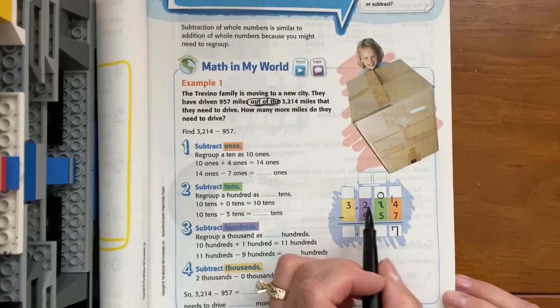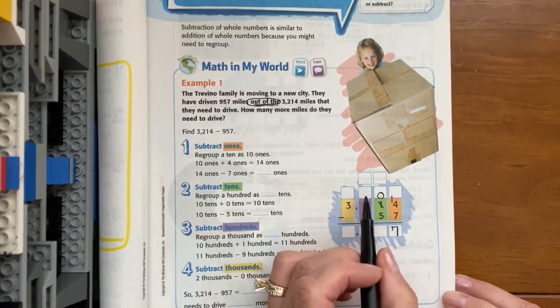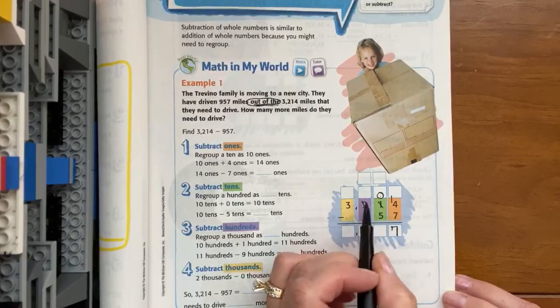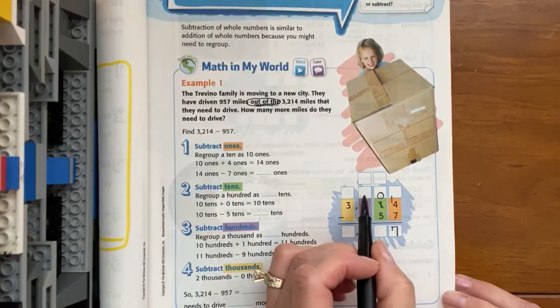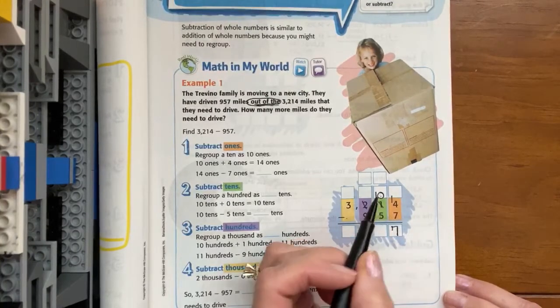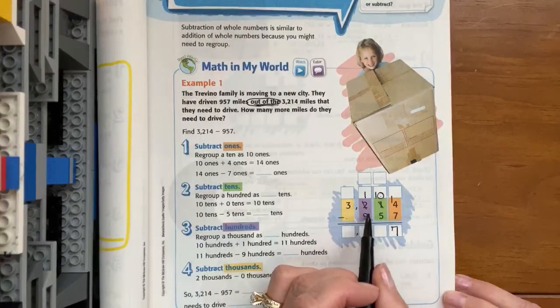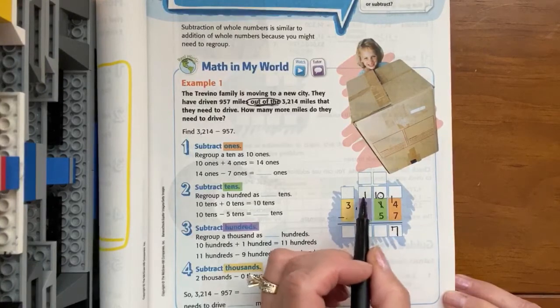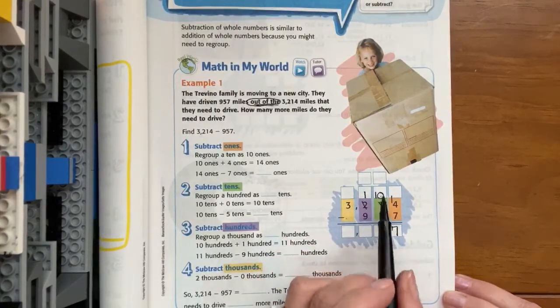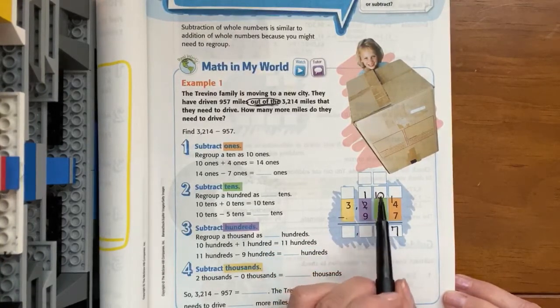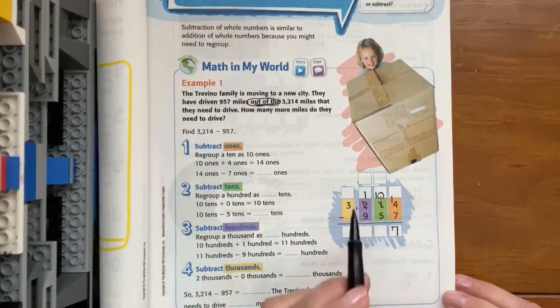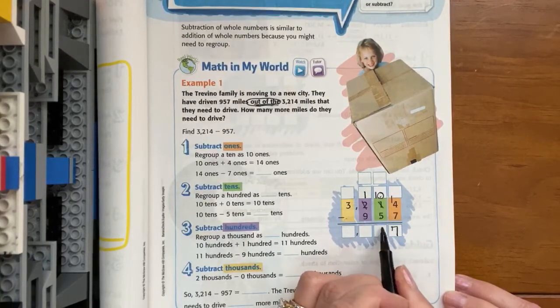So we're again going to go next door to the hundreds and we're going to regroup a group of a hundred in the tens column and we're going to leave behind one group of a hundred. We had two hundreds, we took one, we've left one behind. So now we can solve the tens column. Ten minus five is five.